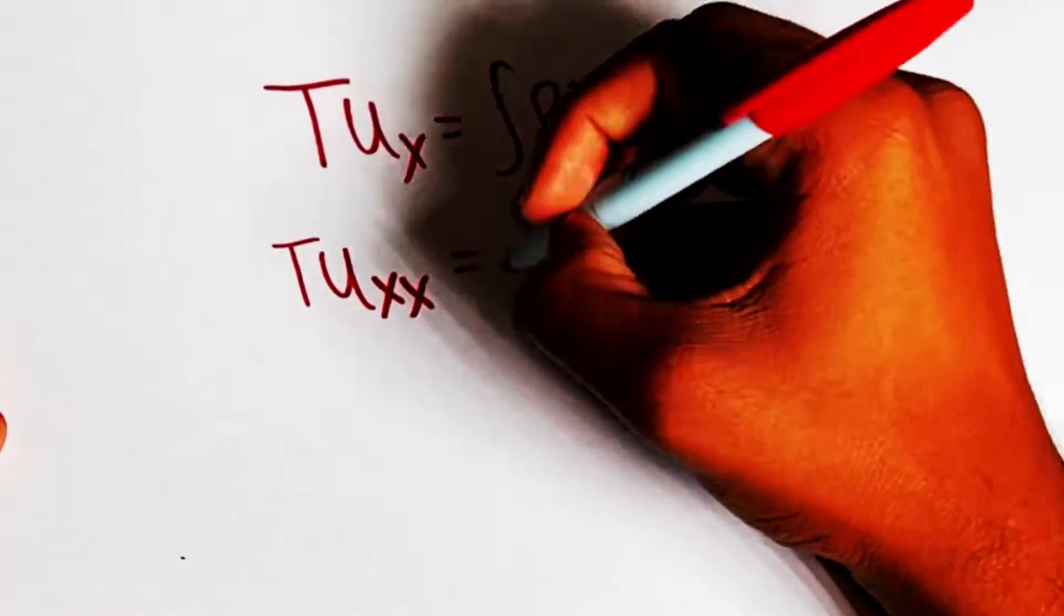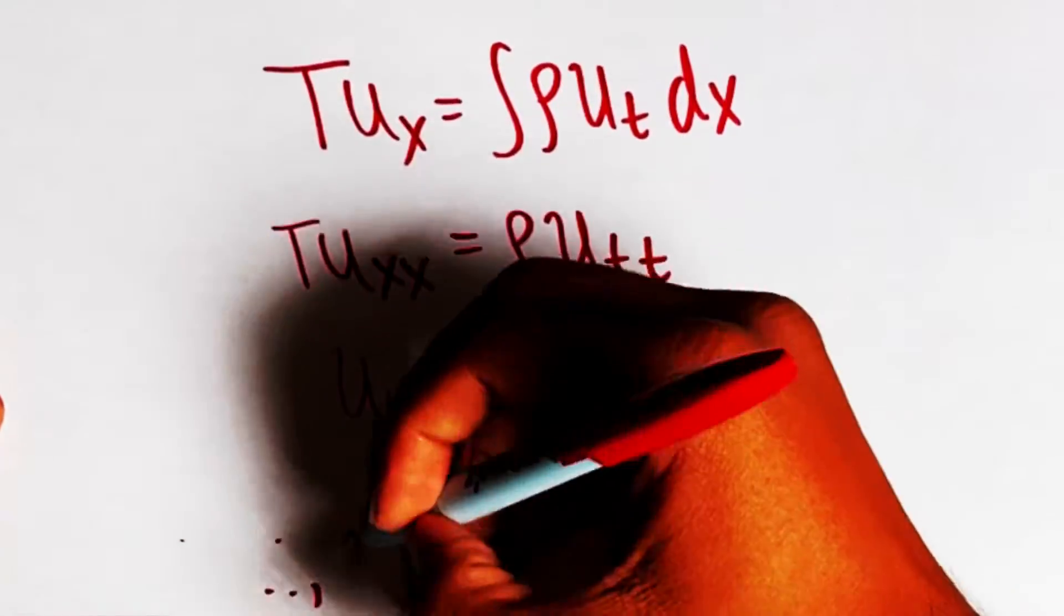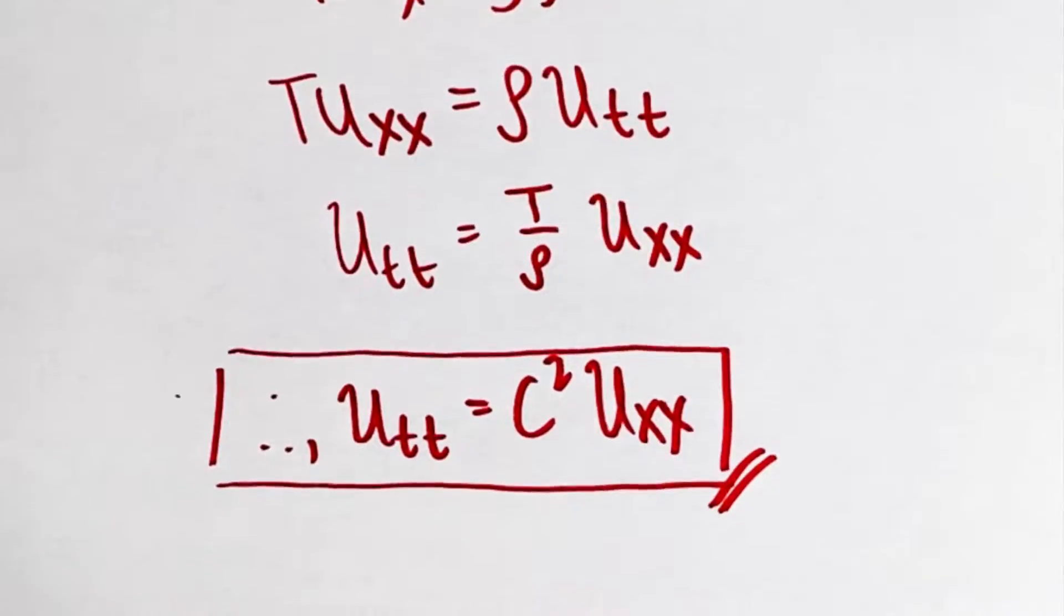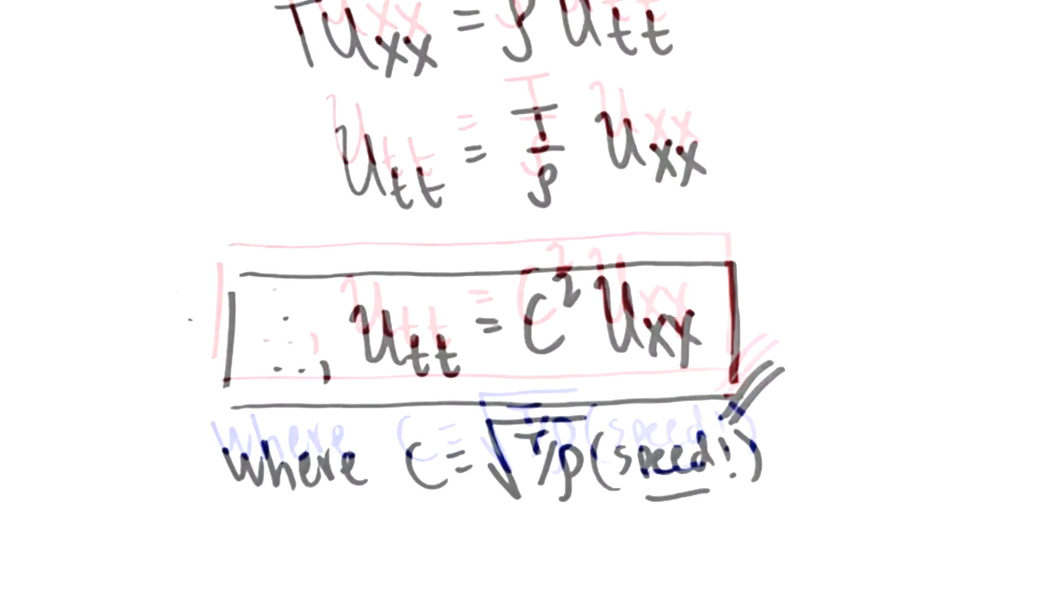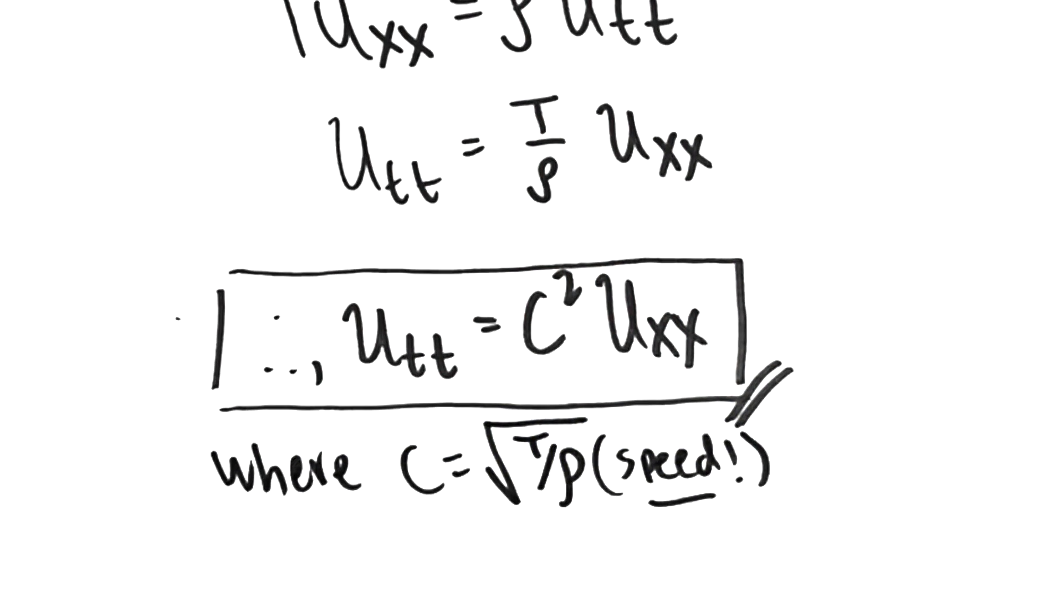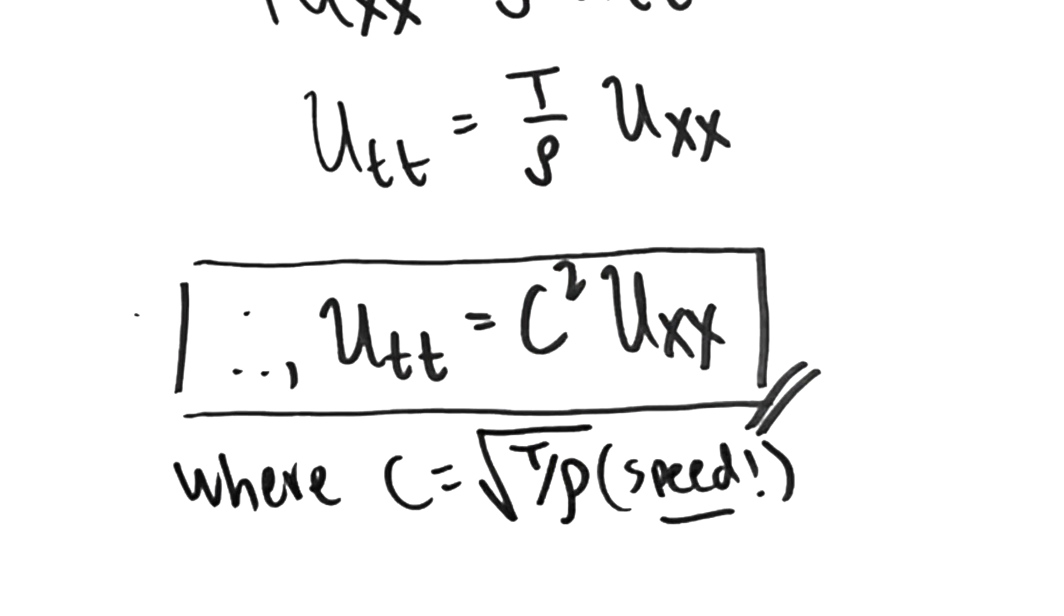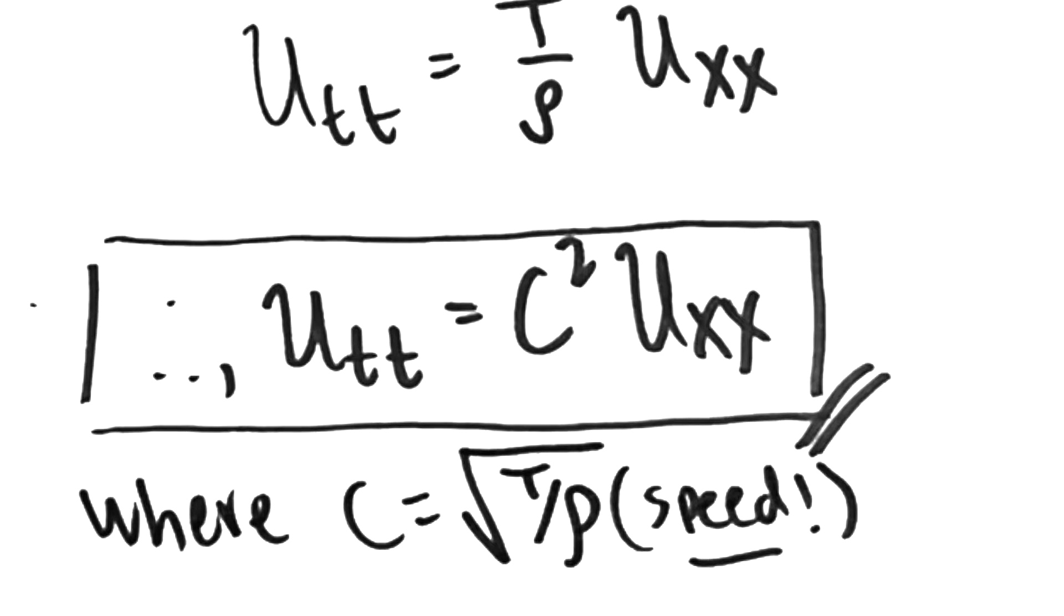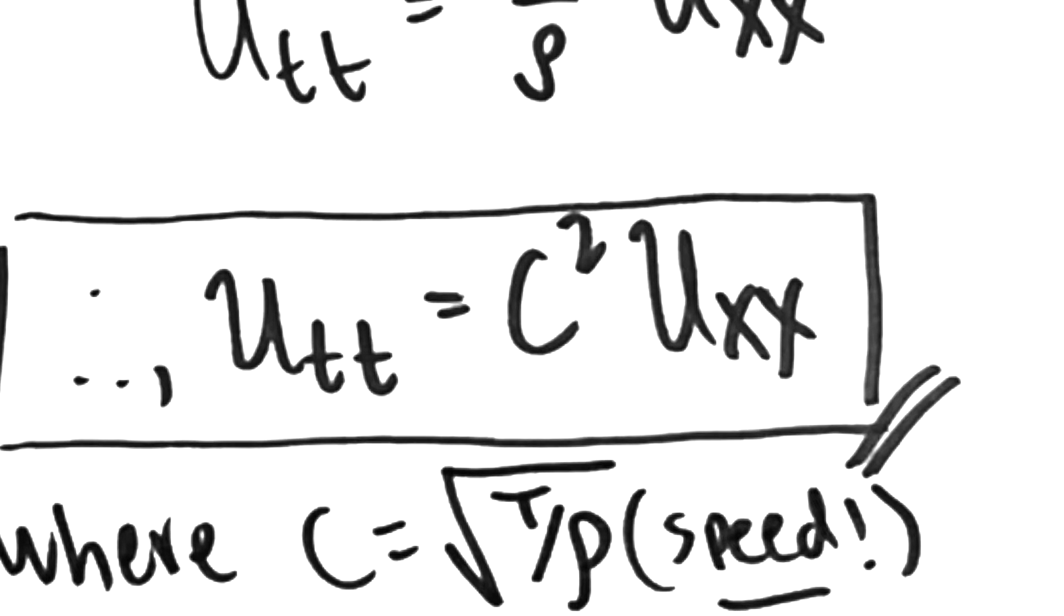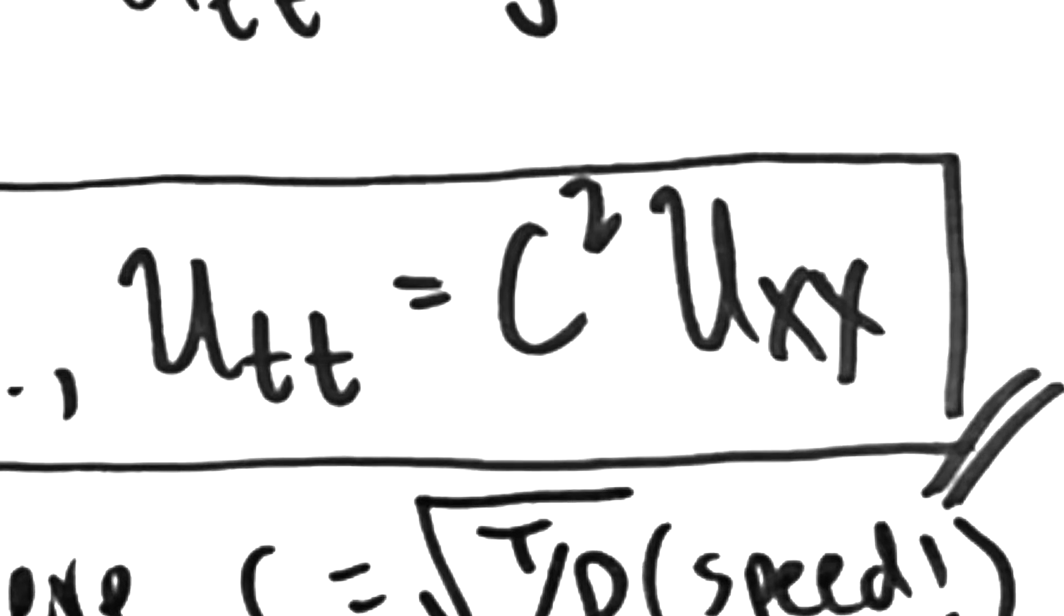So the wave equation, after a couple of math equations and a little algebra, gives us the following equation for the wave. The wave equation is u_tt equals c squared u_xx, where c is equal to the square root of T, the tension, over rho, the density.